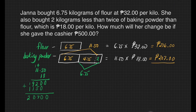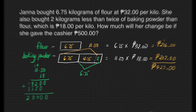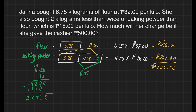Now let us add the two amounts. Zero plus zero is zero. Zero plus zero is zero. Copy the decimal point. Six plus seven is thirteen — write three, carry one. One plus one is two, plus zero is two. Two plus two is four. Janna spent a total of 423 pesos for the flour and the baking soda. This is not yet the final answer because we are looking for the change after paying 500 pesos, so we subtract 423 from 500 pesos.